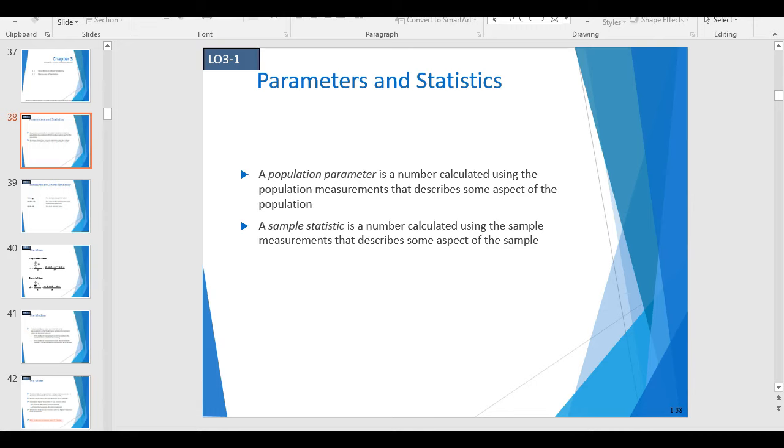Parameters and statistics. We got into this a little bit in Chapter 1. A population parameter is a number calculated using population measurements that describe some aspect of the population. A sample statistic is a number calculated using the sample measurements that describe some aspect of the sample.